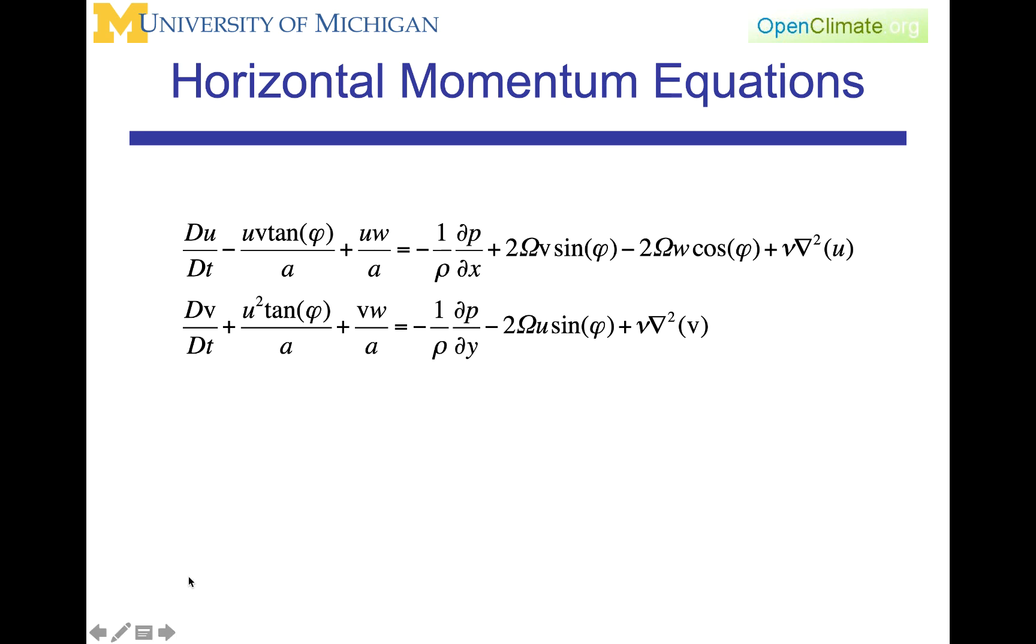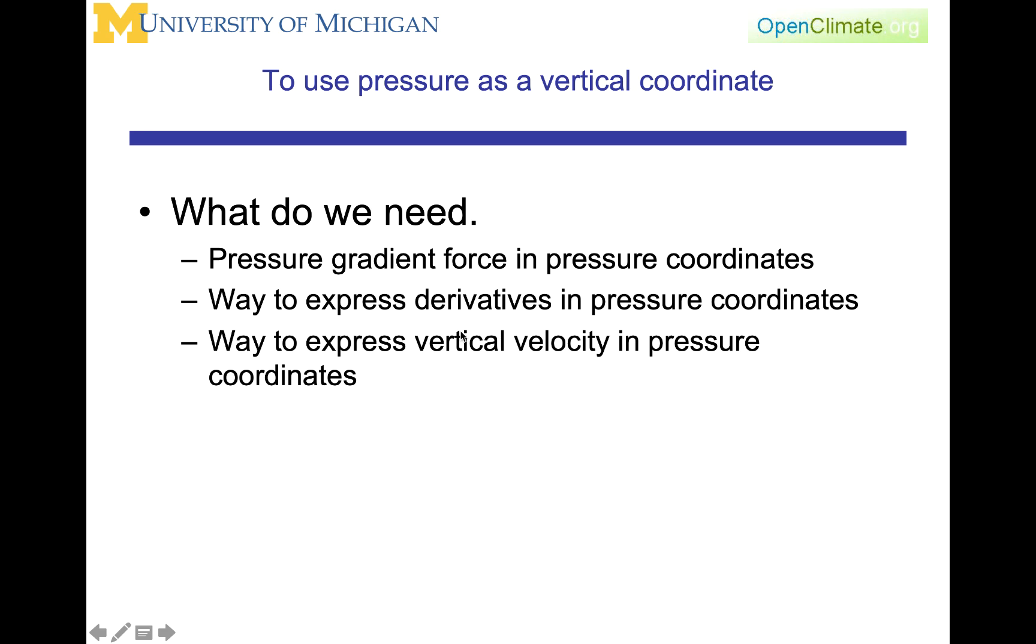Once again, returning to the horizontal momentum equations, we're now going to want to pay special attention to the formulation of the pressure gradient because if we're going to use pressure as an independent variable, pressure as the vertical coordinate, then very obviously we cannot continue to use pressure in the same way in these equations. What do we need? We need the pressure gradient in pressure coordinates. We need a way to express derivatives in pressure coordinates. And we need a way to express vertical velocity in pressure coordinates. What we will focus on in this lecture is the definition of the geopotential, which is then going to let us more easily develop the pressure gradient force in pressure coordinates.